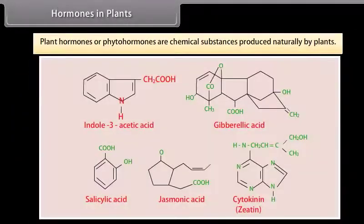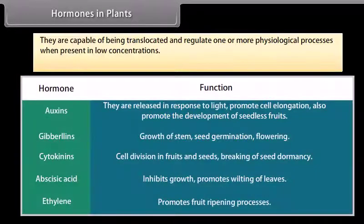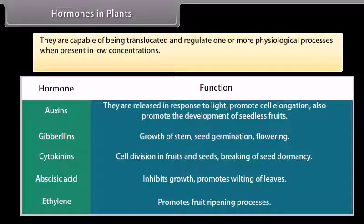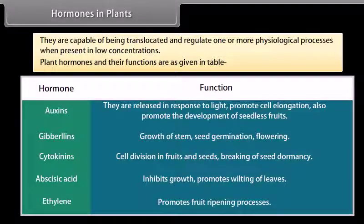Plant hormones, or phytohormones, are chemical substances produced naturally by plants. They are capable of being translocated and regulate one or more physiological processes when present in low concentrations. Plant hormones and their functions are as given in the table.